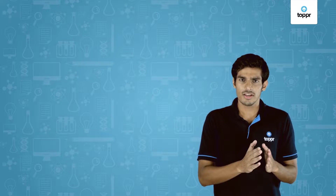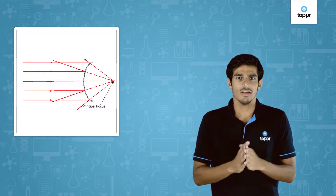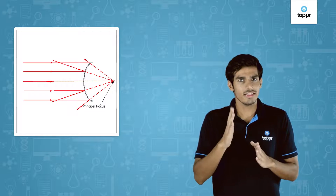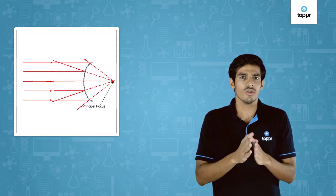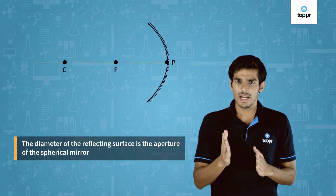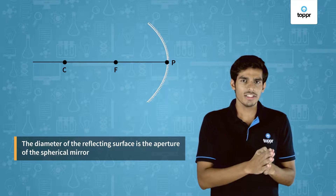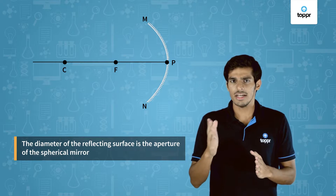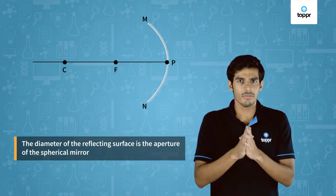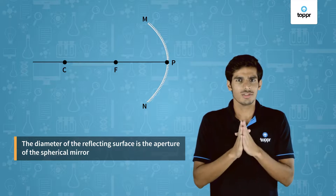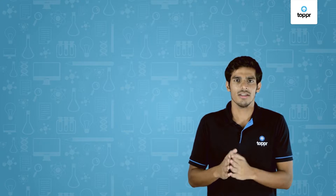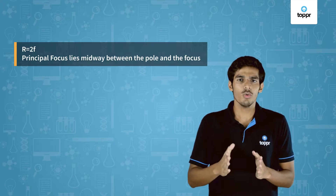In place of a concave mirror, if we take a convex mirror, the reflected rays appear to come from a point on the principal axis — this point is the principal focus of a convex mirror. The diameter of the reflecting surface is called the aperture of a spherical mirror, represented by MN. In our discussion, we will only work with mirrors whose apertures are smaller than the radius of curvature. For spherical mirrors with a small aperture, the radius of curvature is equal to twice the focal length: R equals 2f. This implies that the focus lies exactly midway between the center of curvature and the pole.